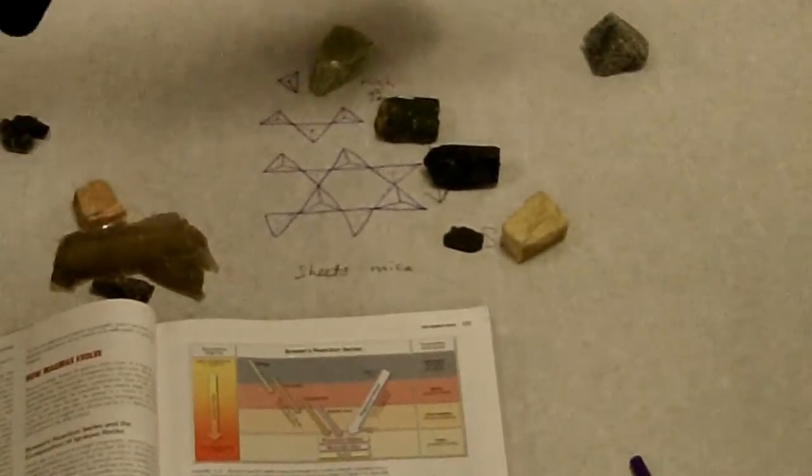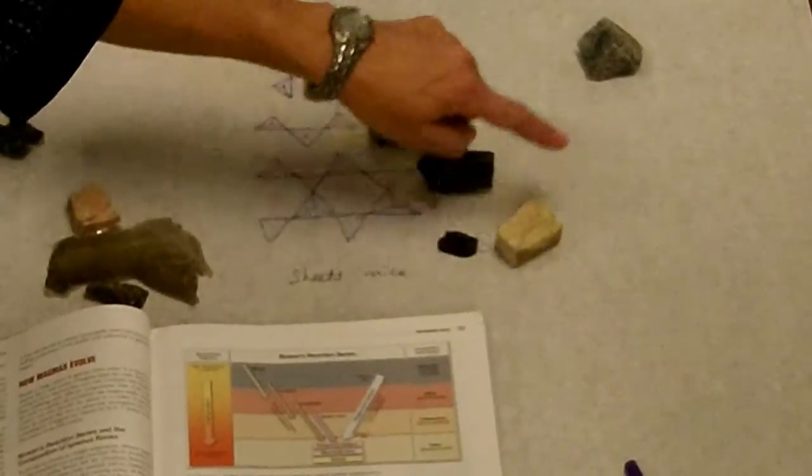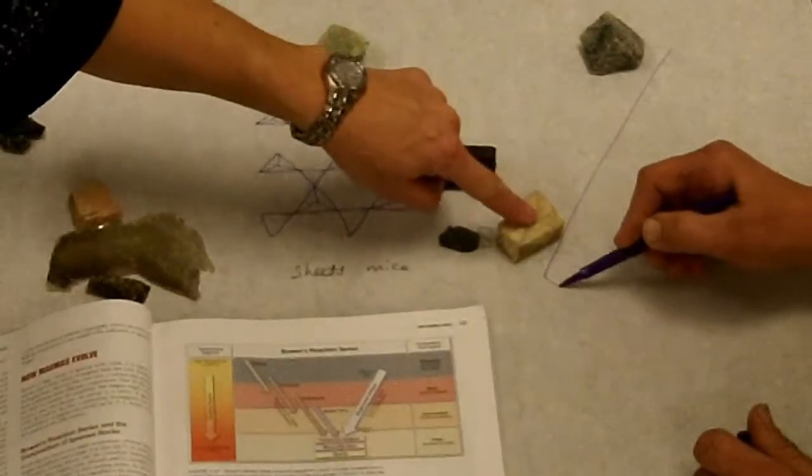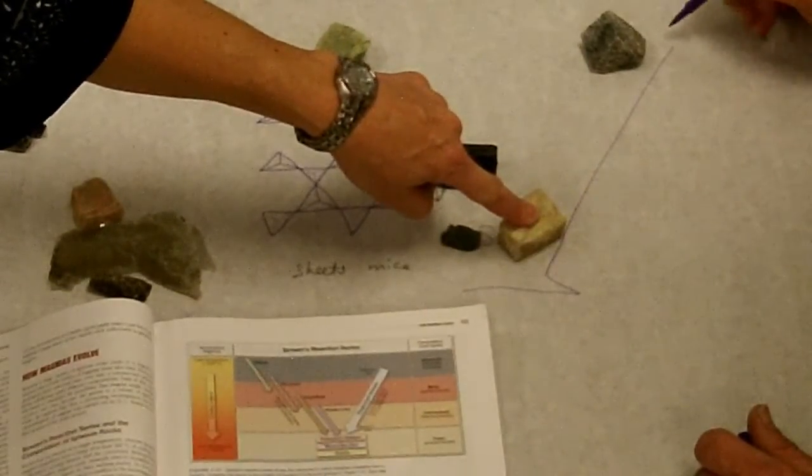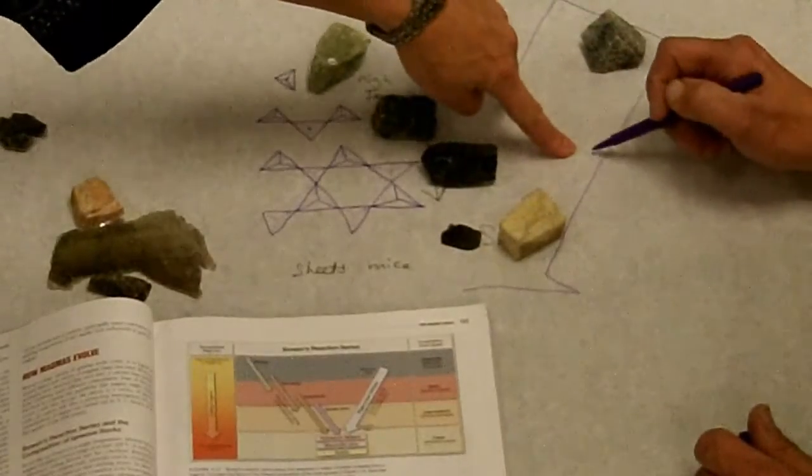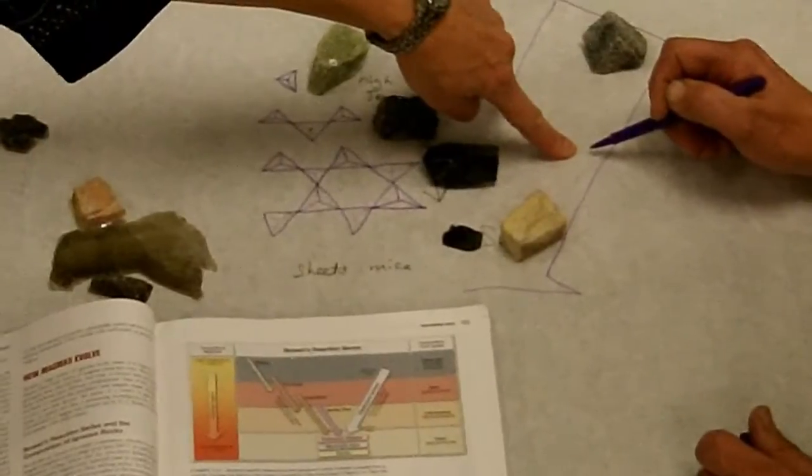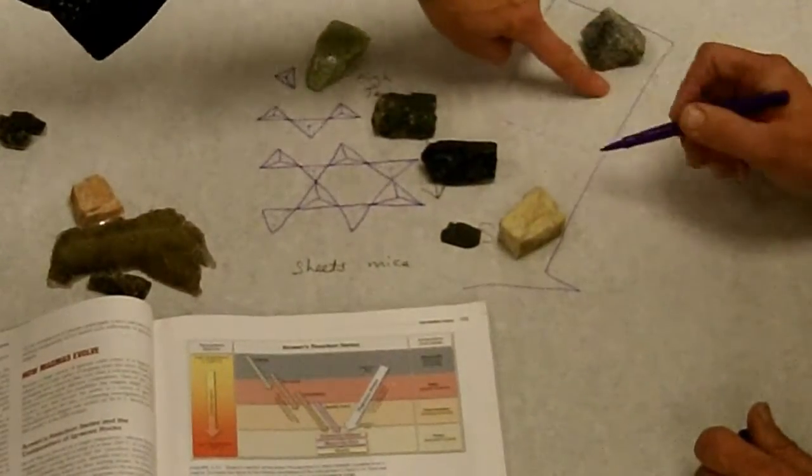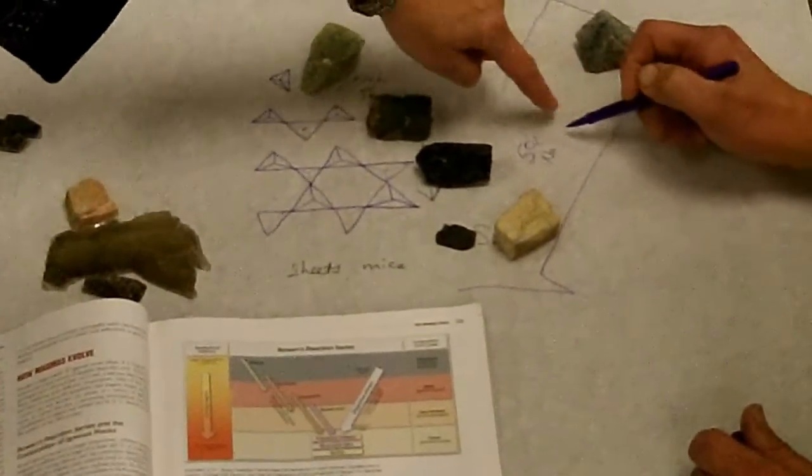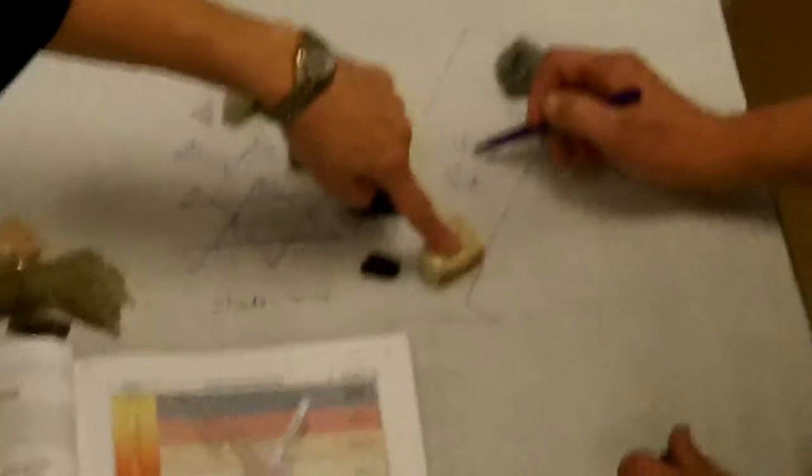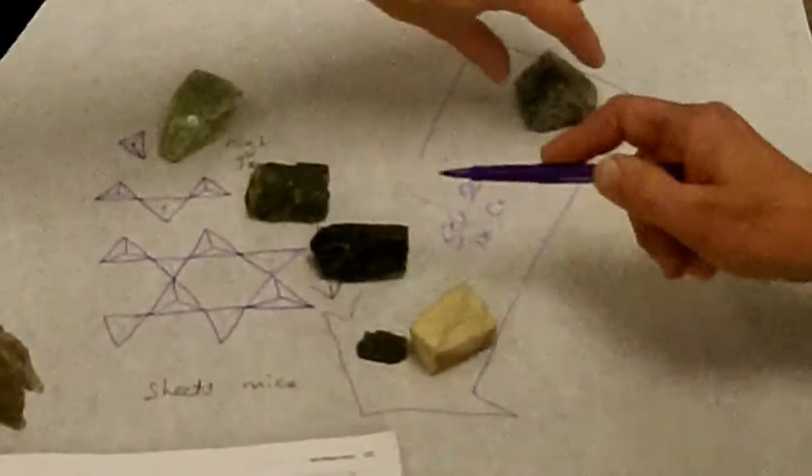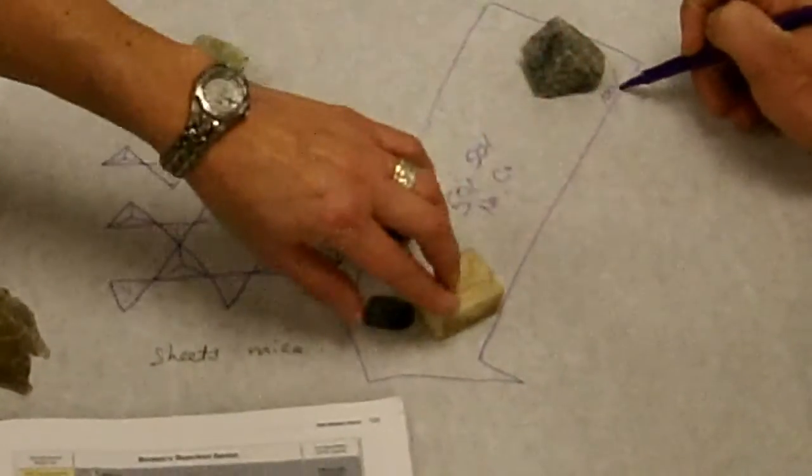So I just want to make sure I understand this. With the feldspar, which are the continuous series, the calcium rich forms at the high temperature, the sodium rich or sodium pure feldspar forms at the low temperature. And in between those two, halfway, there's going to be a feldspar that is 50% calcium, 50% sodium. And a little bit closer to the calcium feldspar, there's going to be a feldspar that's more calcium than sodium. The closer we get to the sodium feldspar, the more sodium there is. So you have a gradation that changes from all calcium to all sodium.